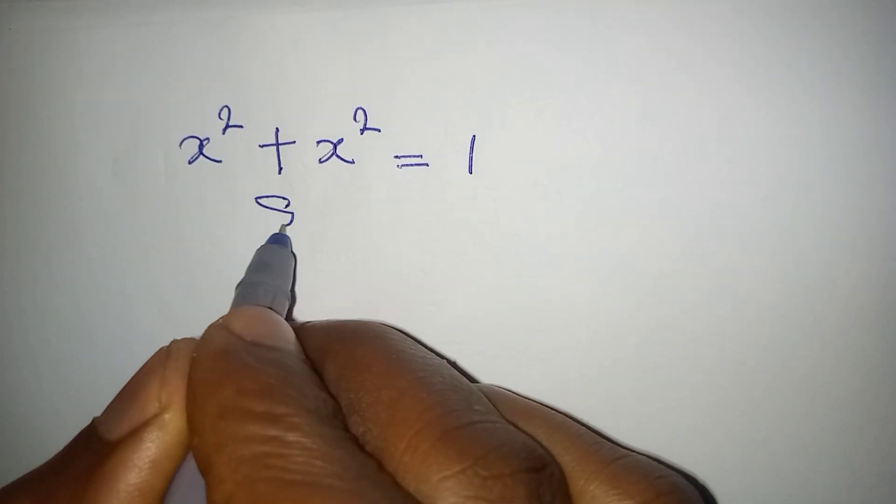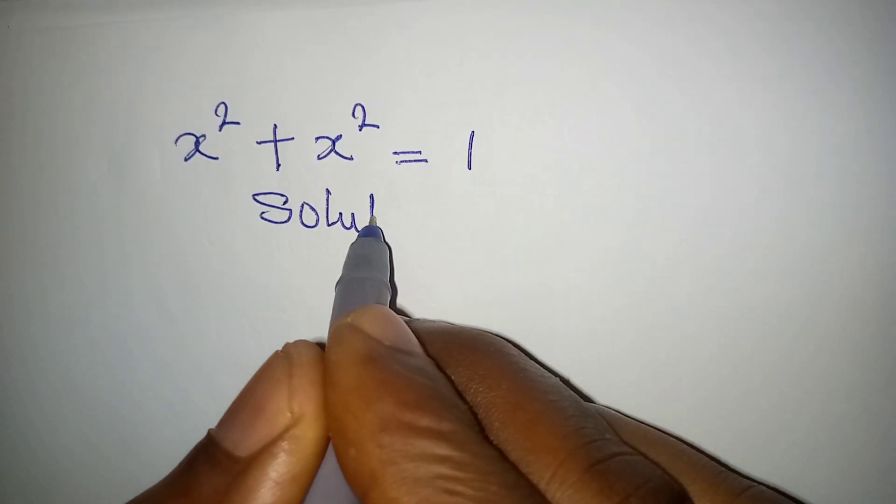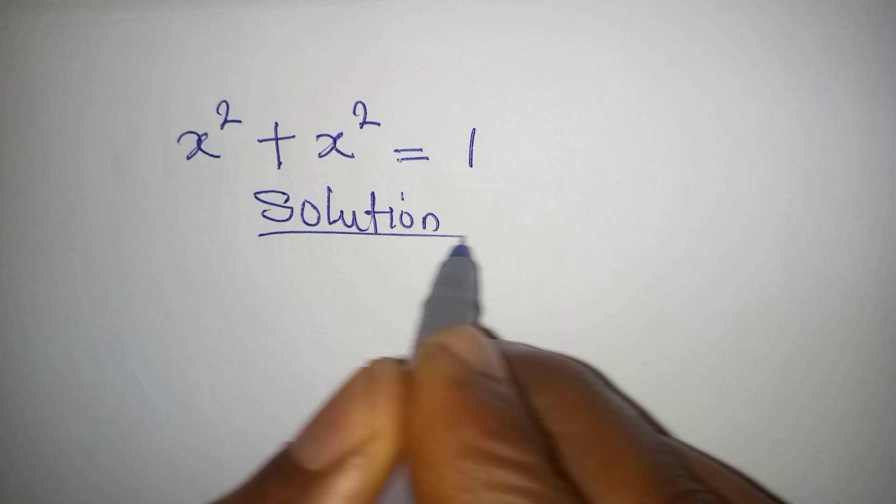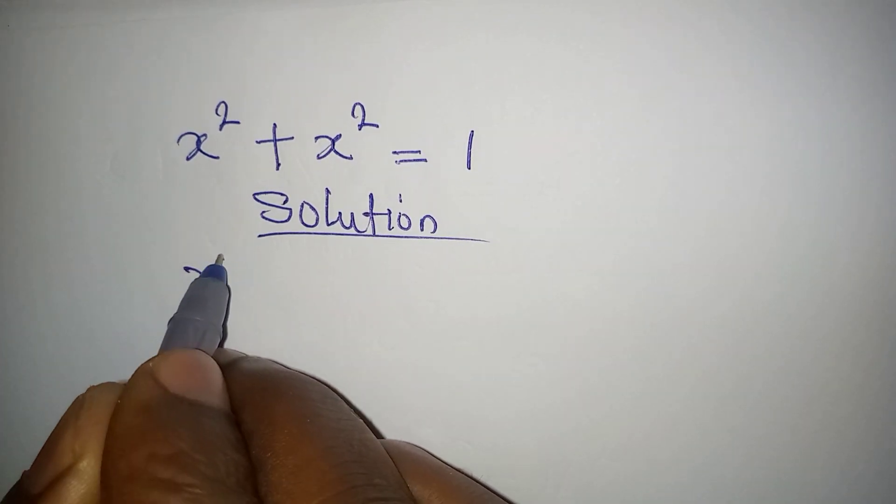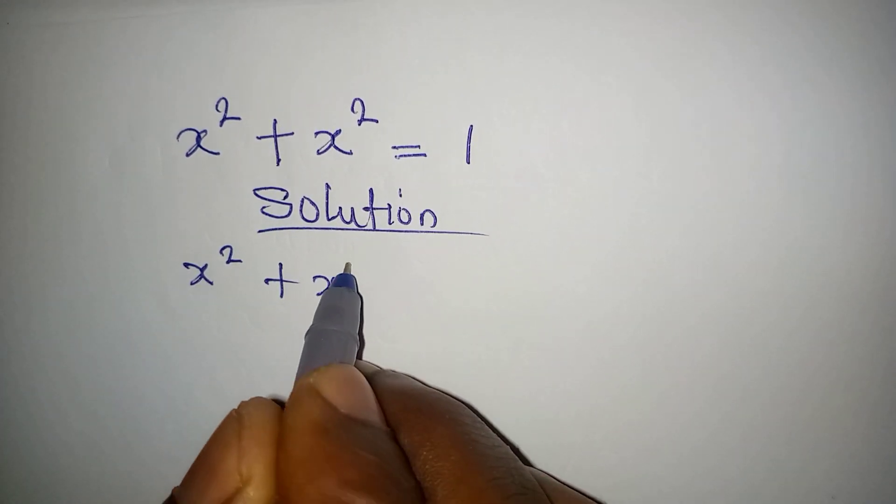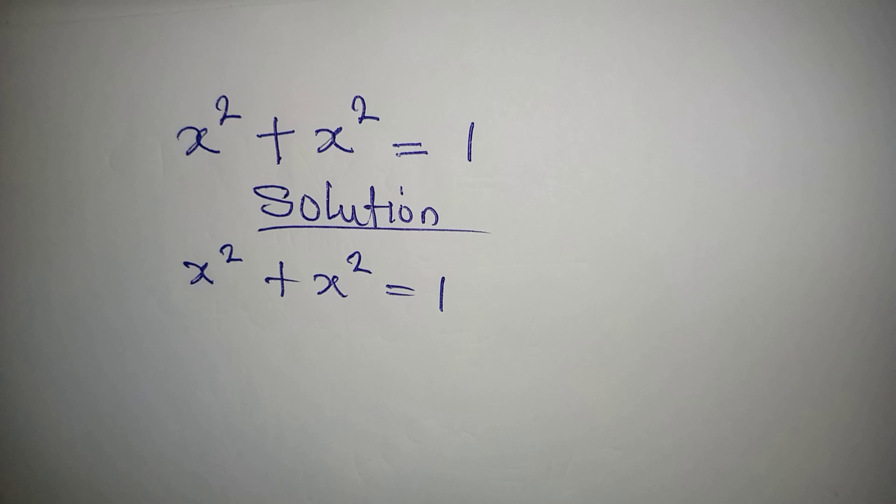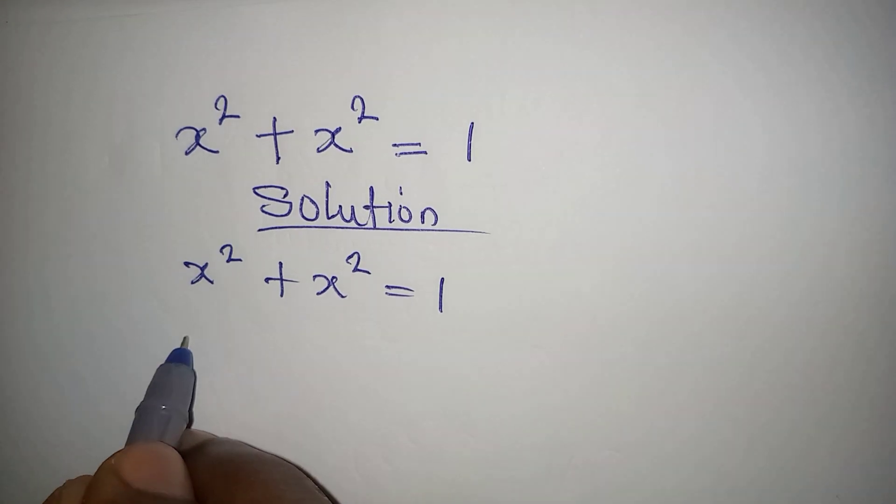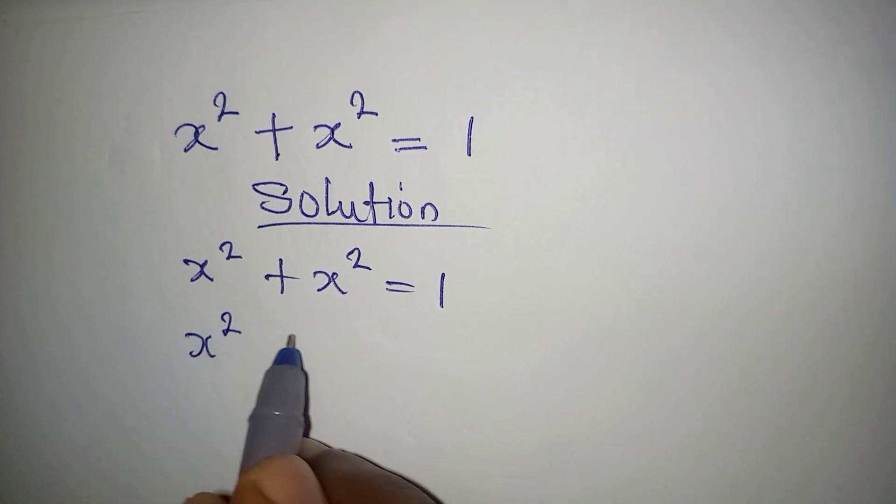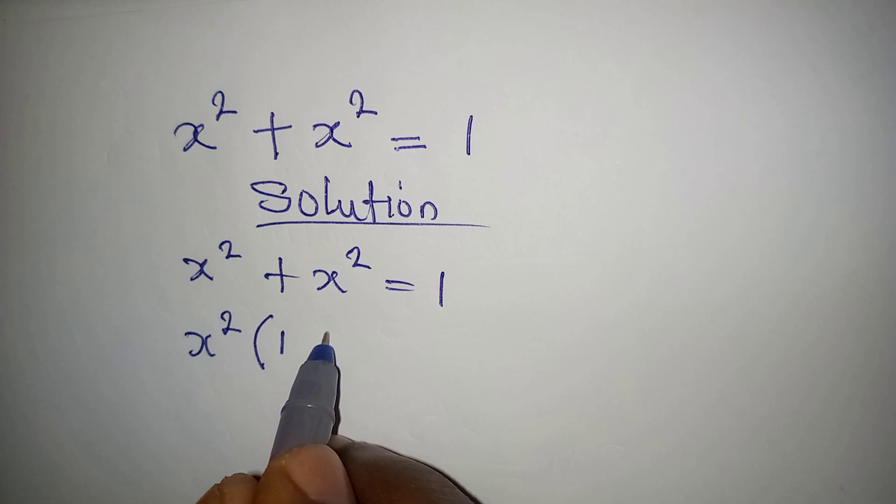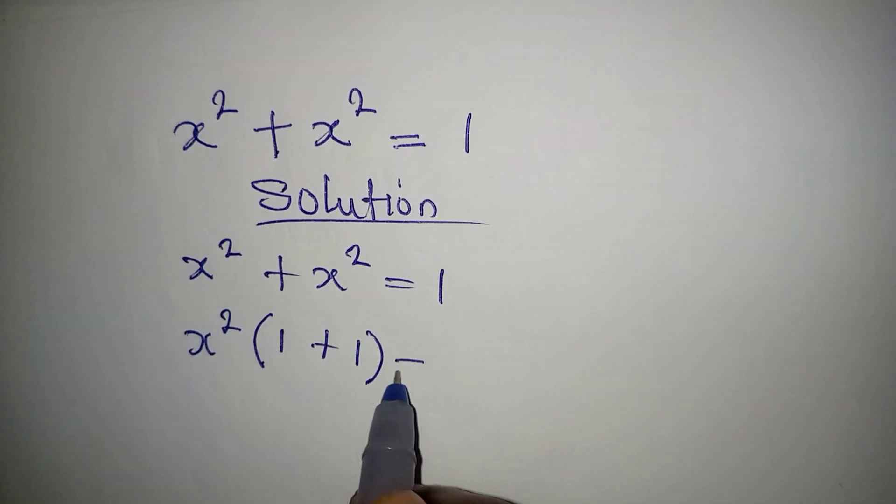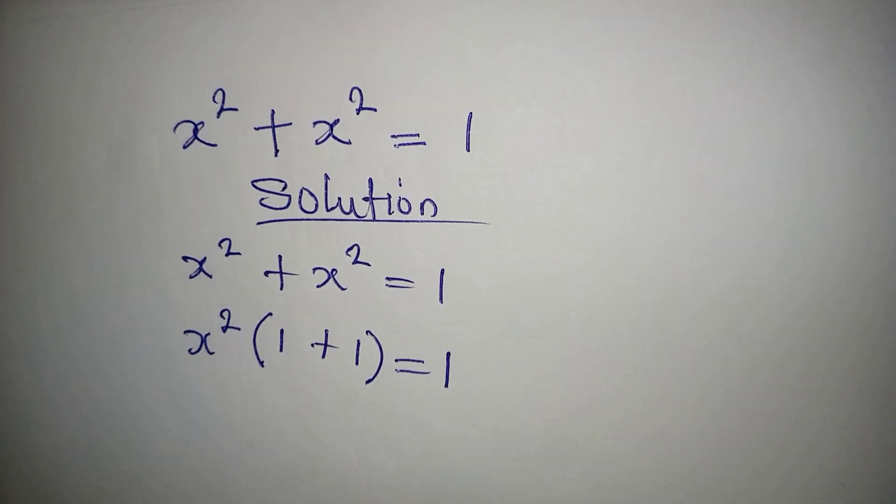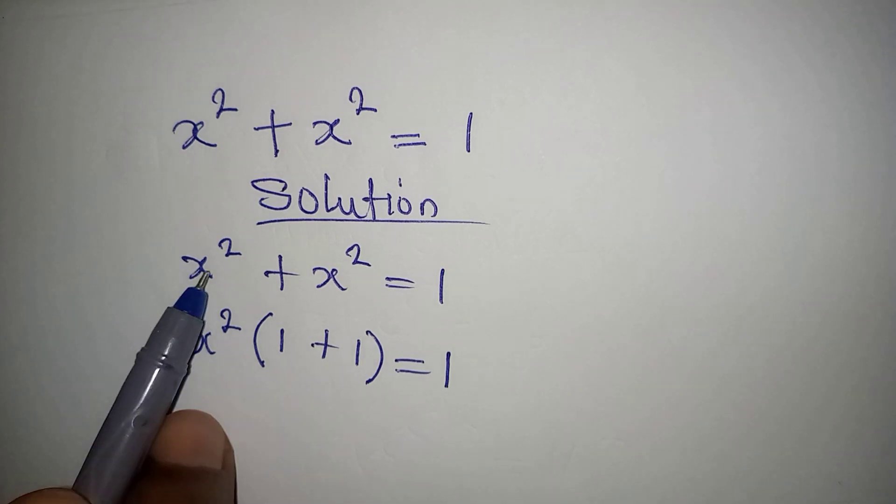Hello everyone, let's provide the solution to this problem: x squared plus x squared equals 1. Now let's factor out x squared and we have 1 plus 1 equal to 1. How did I get the 1 plus 1?